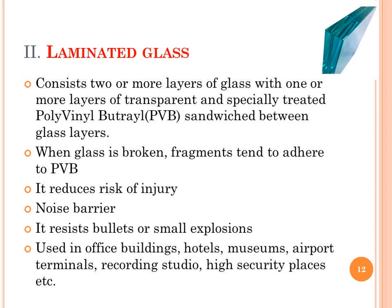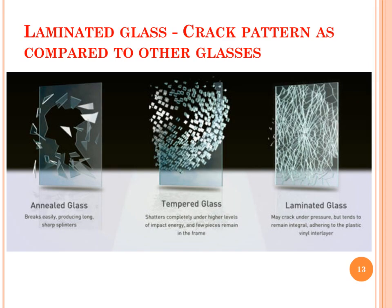It is used in office buildings, hotels, museums, airport terminals, recording studios, high security places, etc. The figure here shows the crack pattern in laminated glass as compared to other glasses. Annealed glass breaks easily producing long sharp splinters. Tempered glass shatters completely under high levels of impact energy and few pieces remain in the frame. The laminated glass may crack under high pressure but it tends to remain integral, adhering to the plastic vinyl interlayer.